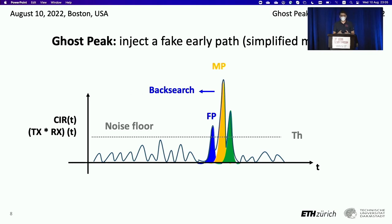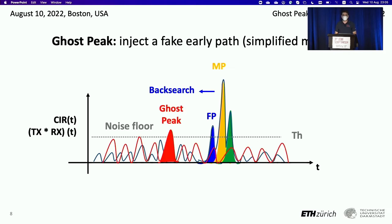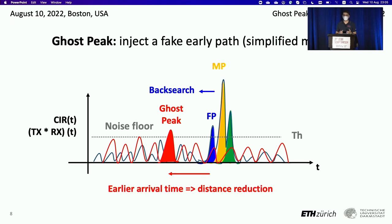What happens at the physical layer under attack is that the injected signal erases the noise floor and creates some peaks. One of them might go above the threshold and be recognized as the earliest peak. This is a ghost peak because it doesn't exist — it doesn't correspond to a real path. But since it arrives earlier than the legitimate earliest path, it causes a distance reduction.